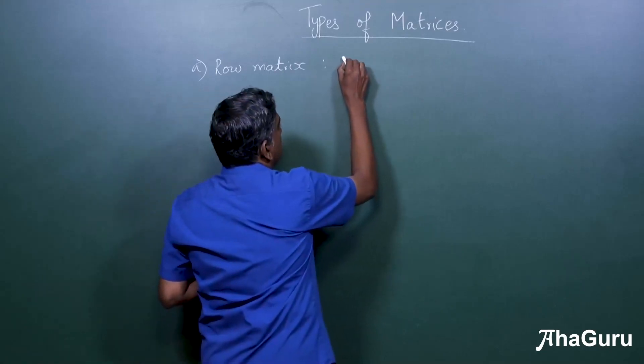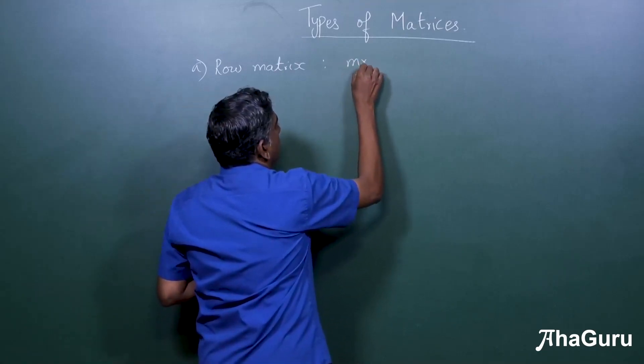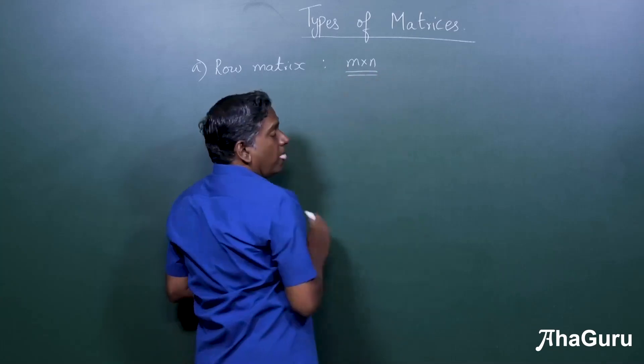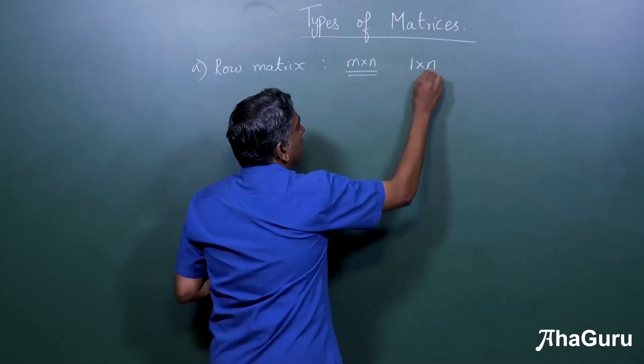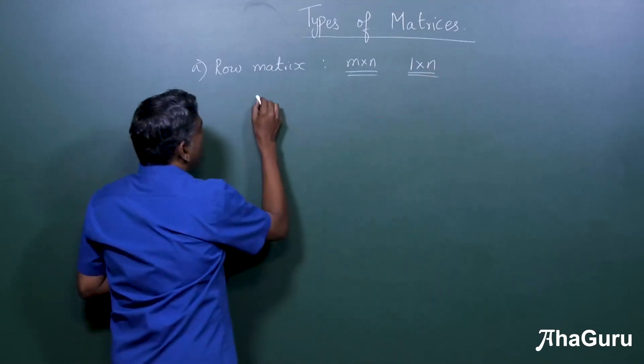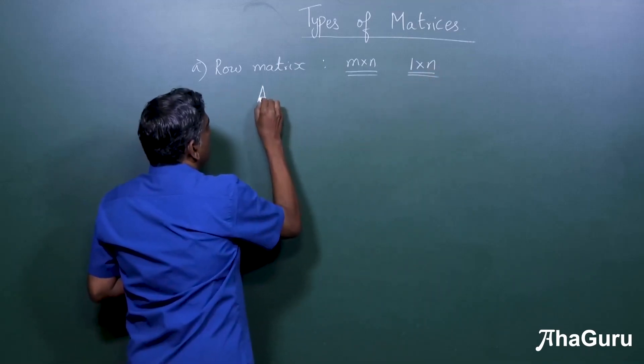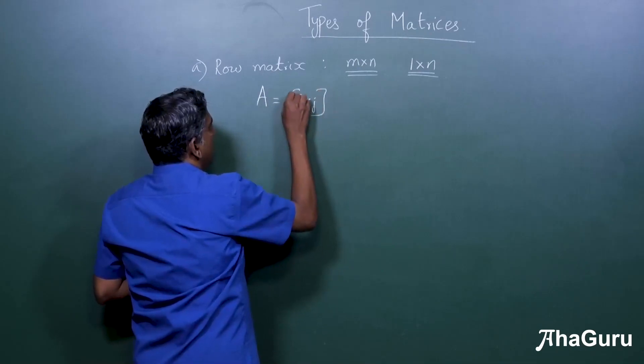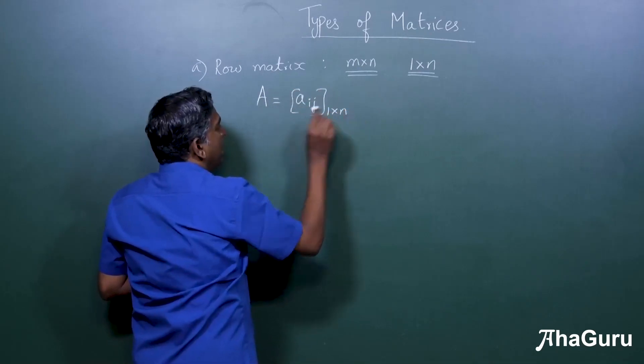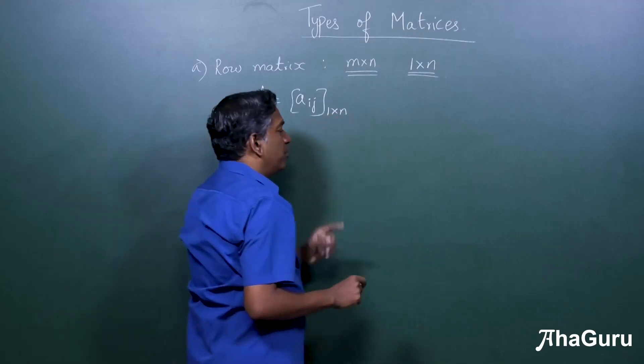Remember we said a matrix has order m by n. So if there's only one row, it is one by n. So a row matrix will be of the form aij, one by n. One row, any number of columns.